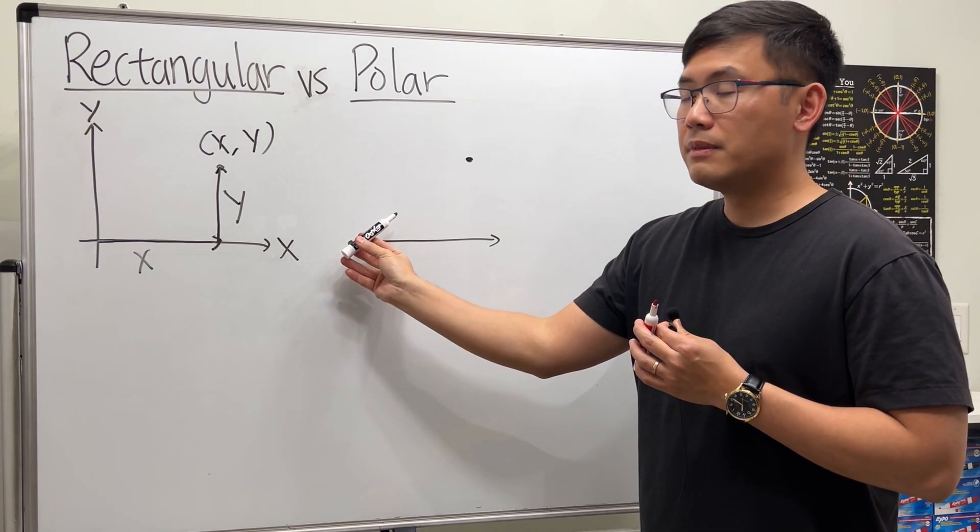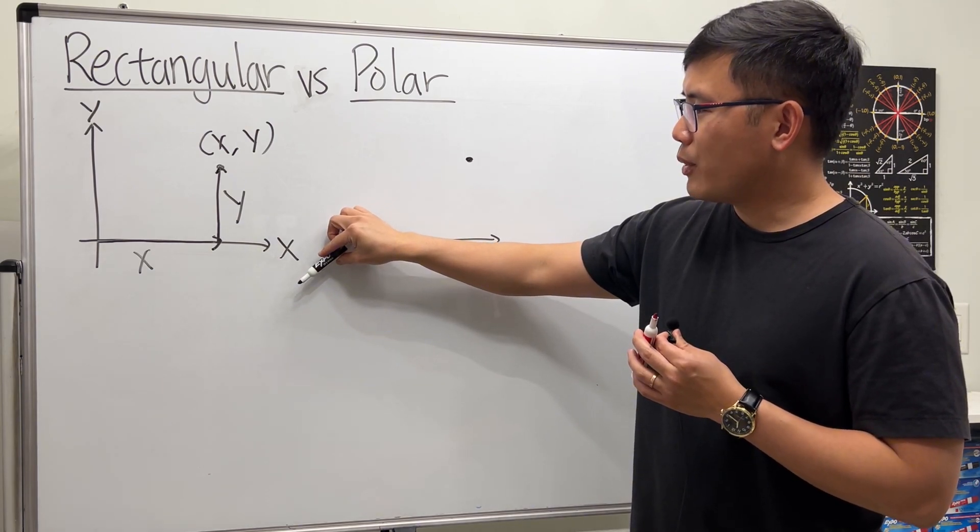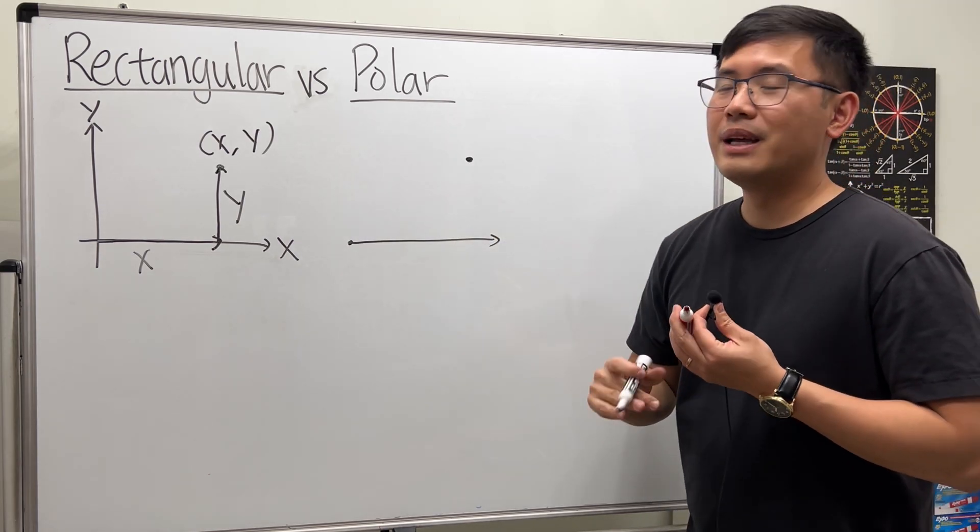Sometimes maybe you rotate it too much and the point is actually behind you. In that case that's okay, you can go backwards.